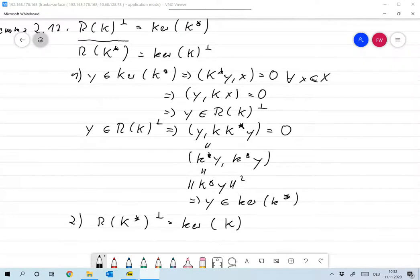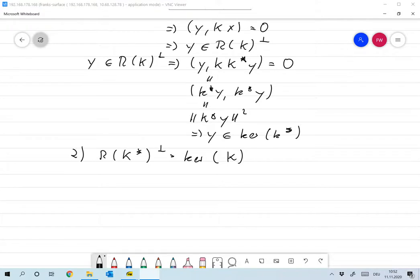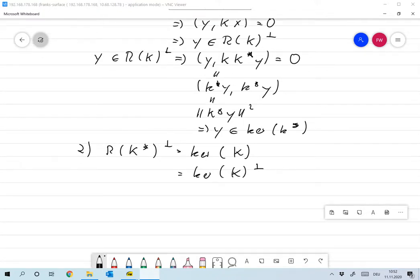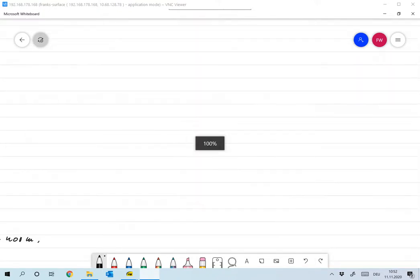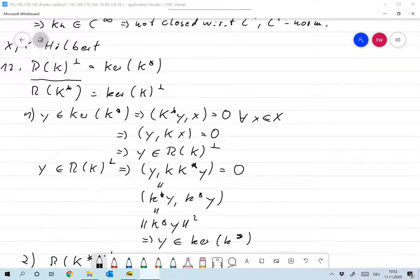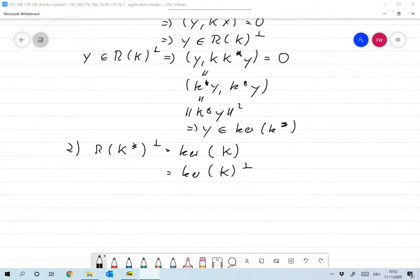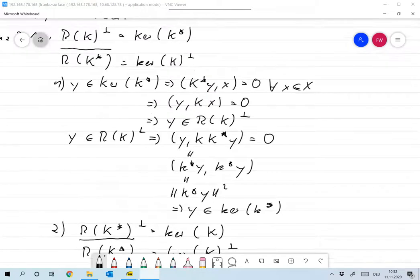And now we take the perp. R of K star perp becomes R of K star perp perp, so that's the closure of K star I already noticed that, so we'll prove this.